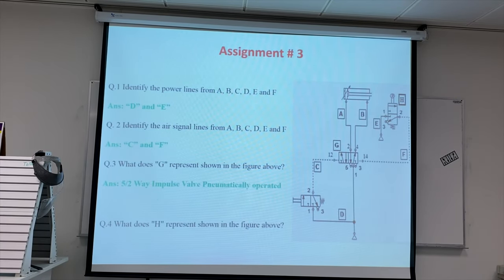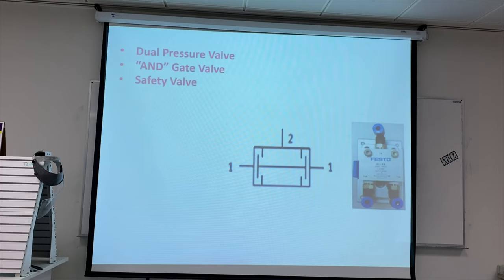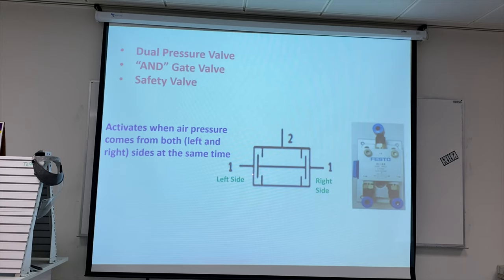Here are the assignment number 3 questions and answers. Next we have the dual pressure valve. This is the dual pressure valve — it means air enters from both the left side and the right side to make output port 2 active.